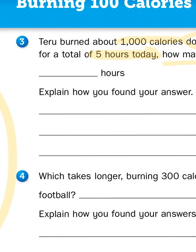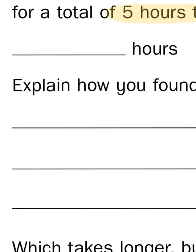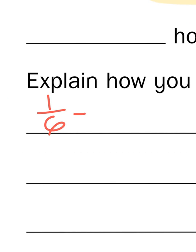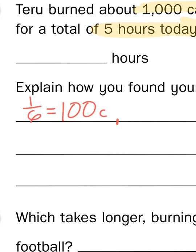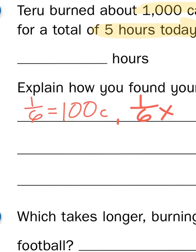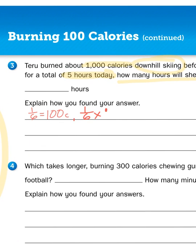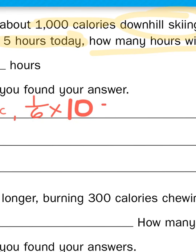I need to figure out how to get 1,000 calories. So 1 sixth of an hour equals 100 calories. That means I need to multiply 1 sixth times 10 because 100 is 1 tenth of a thousand. What's 1 sixth times 10? Well, anything times 10 is just that number with a 0 behind it and since I am ignoring my denominator, 1 sixth times 10 is going to give me 10 sixths. 10 sixths of an hour.